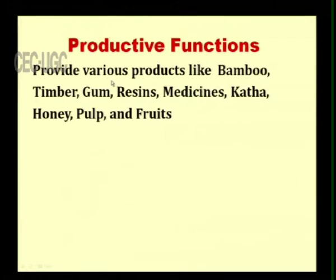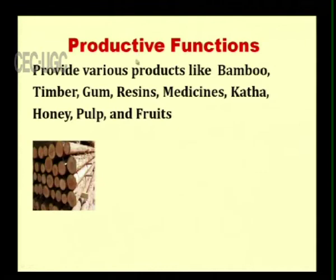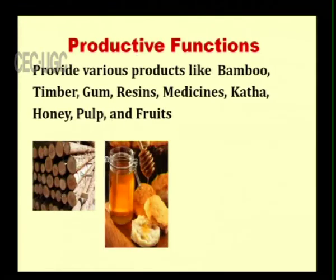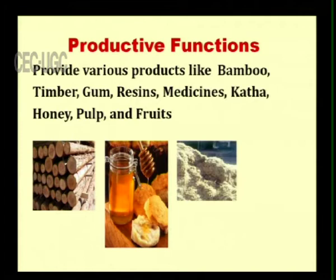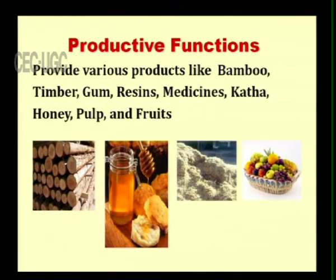The second is the productive function — forests are providing various products like honey, bamboo, timber, gum, resins, medicines, pulp and fruits. They provide timber, honey, pulp and fruits, and therefore it is the second major function of the forest.